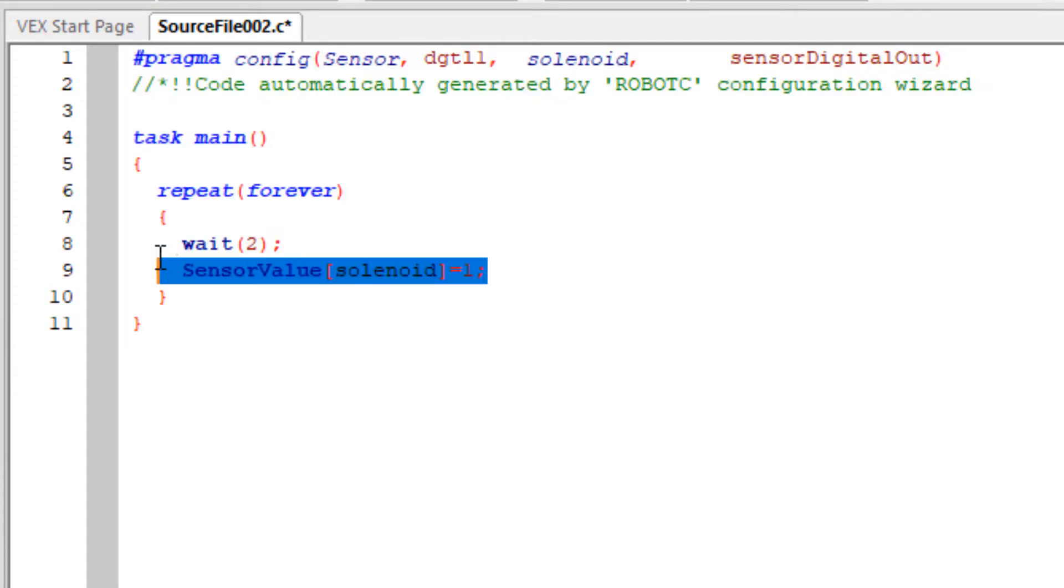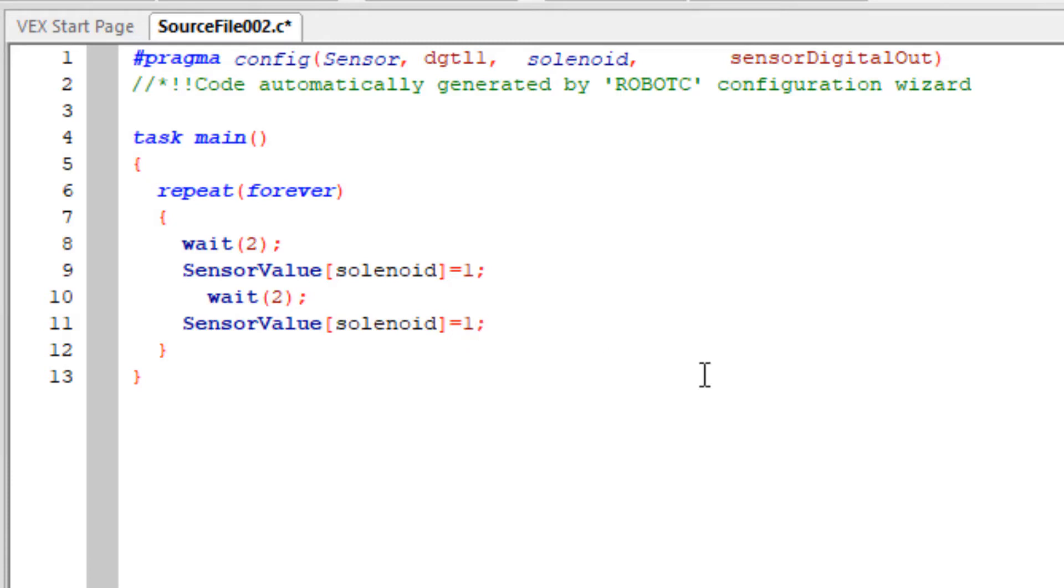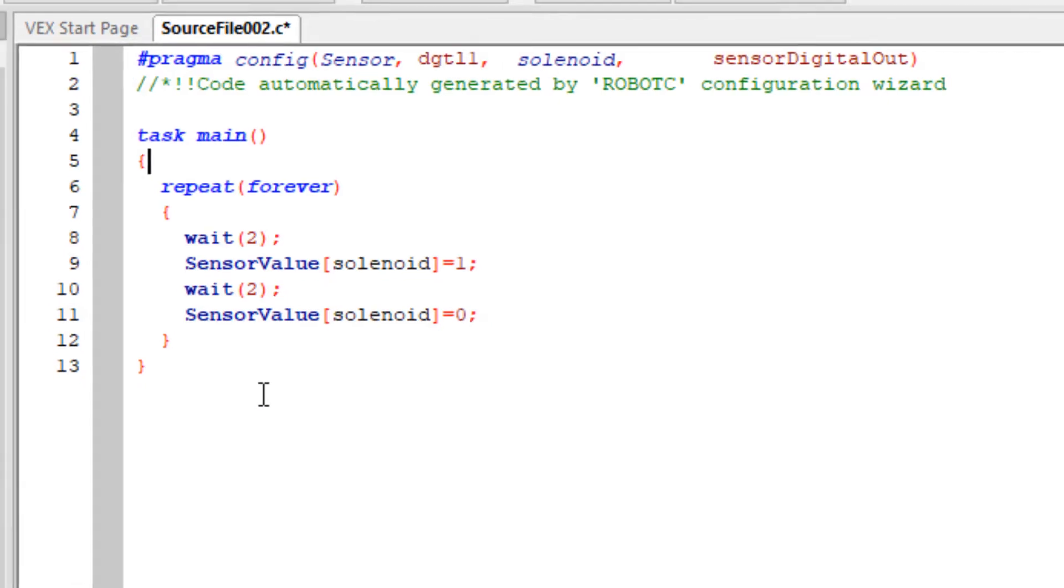And then we're going to repeat that, so I'm going to copy it and paste it. We'll wait for our two seconds, and then this time we're going to change the state to a zero. So repeat forever, wait two seconds, then it's going to turn on the solenoid, wait for two seconds, turn off the solenoid, then cycle back up for a wait for two seconds, and so on, and it should repeat that forever.